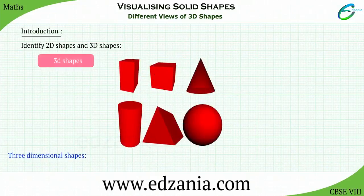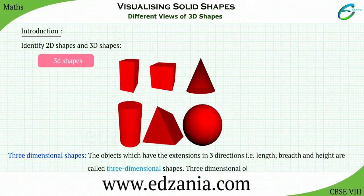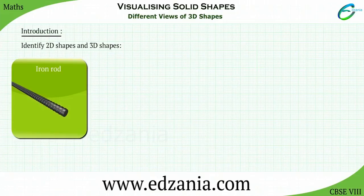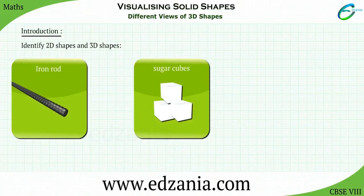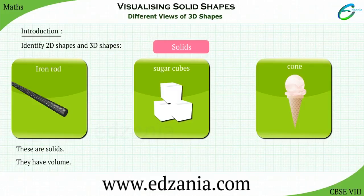3D shapes are the objects which have extensions in three directions, i.e. length, breadth and height. They are called three-dimensional shapes. Three-dimensional objects have thickness. 3D shapes are all solid because they have volume, i.e. they occupy space. The solids are also called three-dimensional objects.